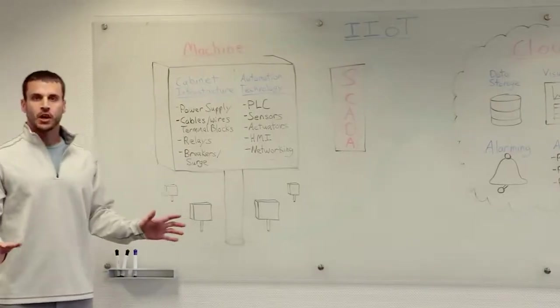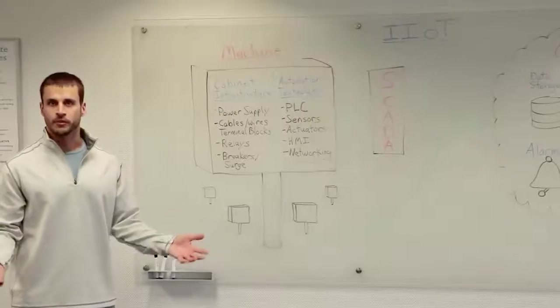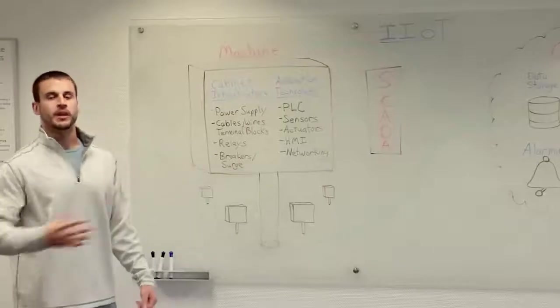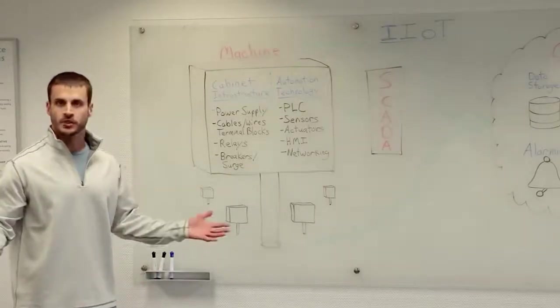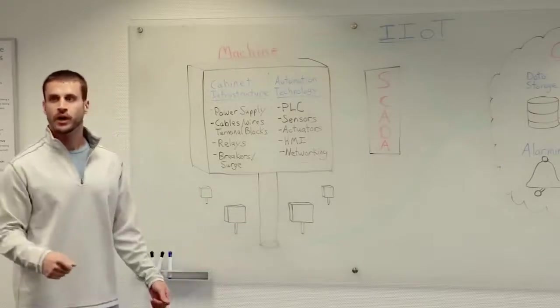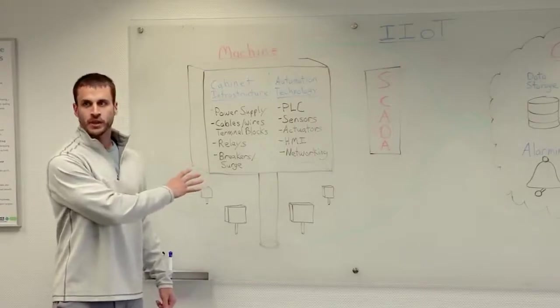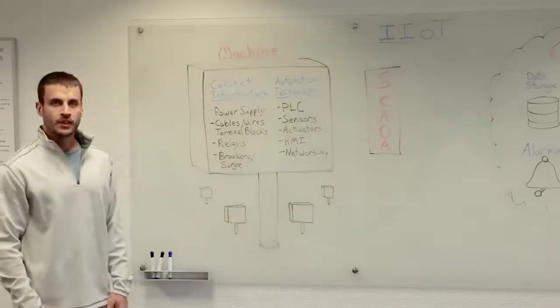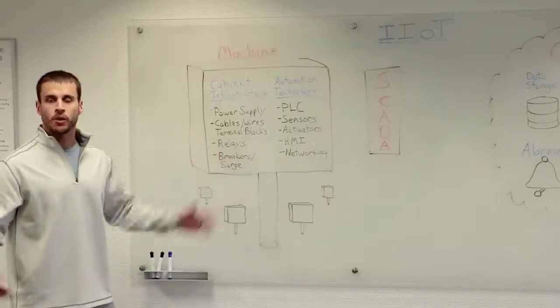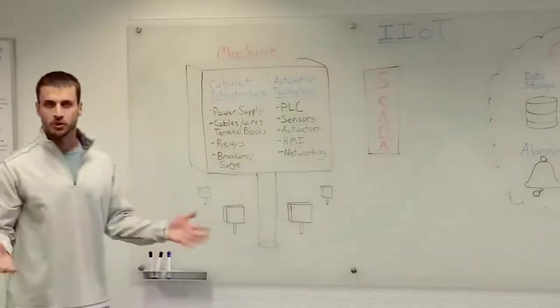Now, as a point of clarification, a lot of times when people think of the Industrial Internet of Things, they think of smart manufacturing. Now, while this could be a packaging machine used in a manufacturing plant for a food and beverage company, this could also be an automated guided vehicle driving around a warehouse picking up boxes. This could be the electrical control cabinet for a substation for a power utility. This could be a control cabinet for a lift station used by a water treatment facility. This could really be any machine used in an industrial industry.